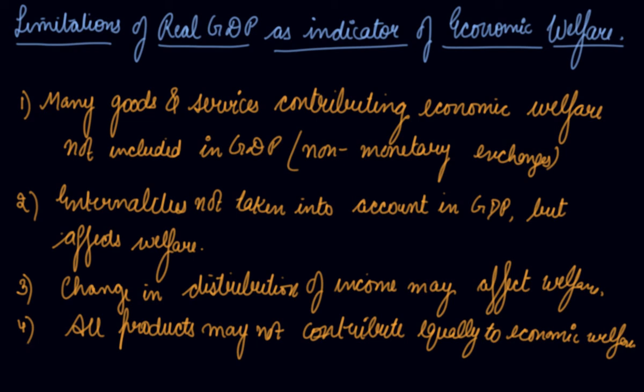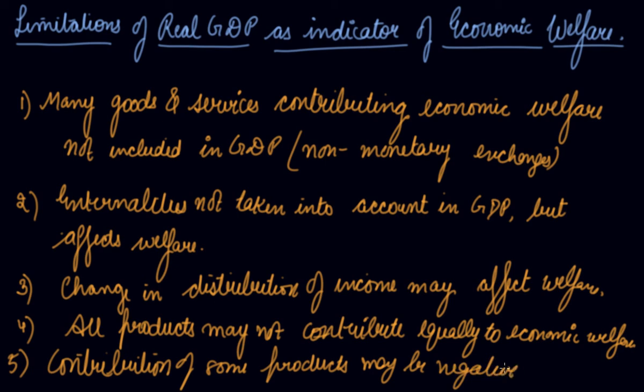The fifth we have is contribution of some products may be negative. What does this mean? See, in your GDP, while calculating your GDP you are considering all the goods and services that are produced in the economy at their current market prices, right? When you produce liquor or some health hazardous products, liquor is contributing to the GDP because it is being produced, it is being sold, so this is contributing to the GDP. But this is not doing an economic welfare because this is not good for the health of people, so this is not doing an economic welfare to the people.